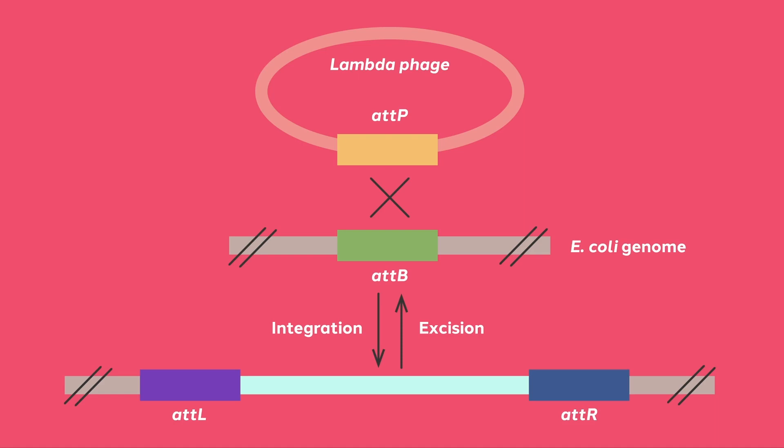Phage Lambda, in an attempt to outwit the restriction enzyme defense of E. coli, evolved a lysogenic pathway. In this situation, the Phage uses site-specific recombination to integrate itself into the bacterial genome and hide from the restriction enzyme defense. The enzymes used by Phage Lambda to integrate and later excise itself are the basis of gateway cloning.